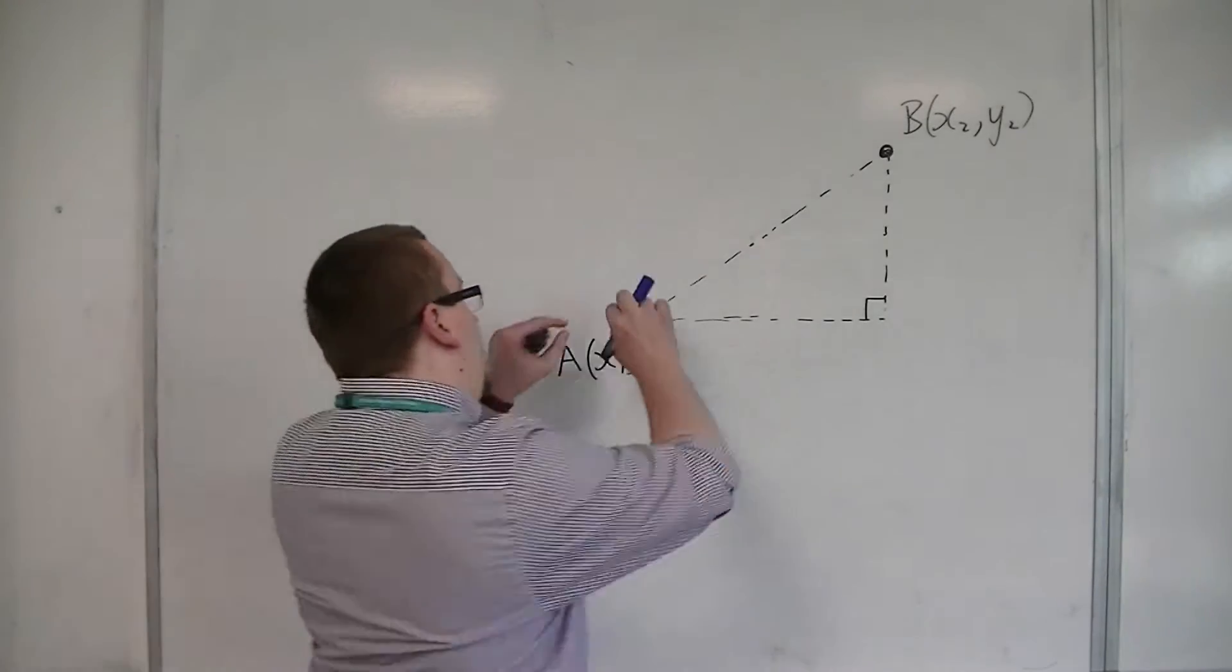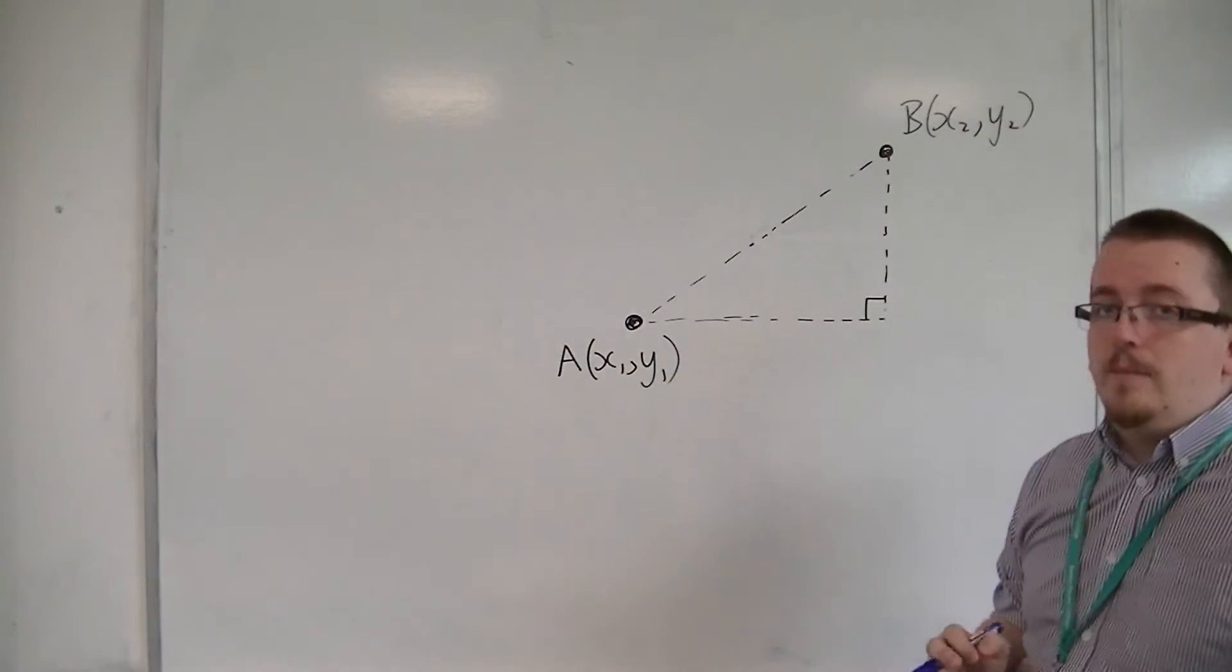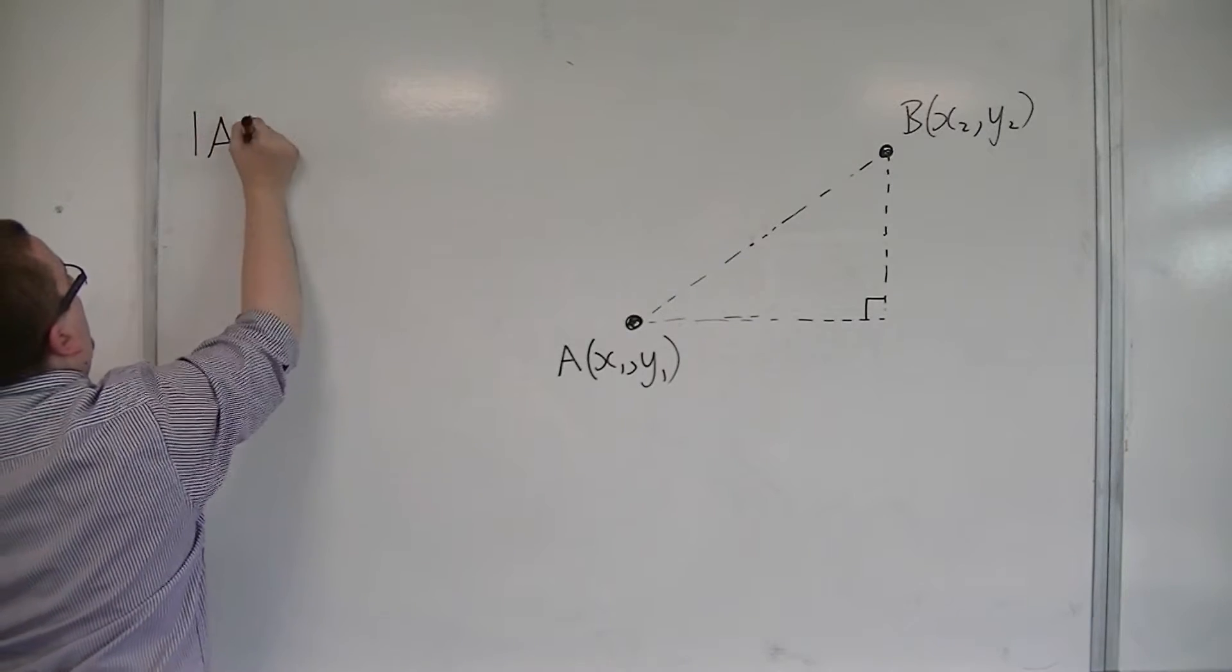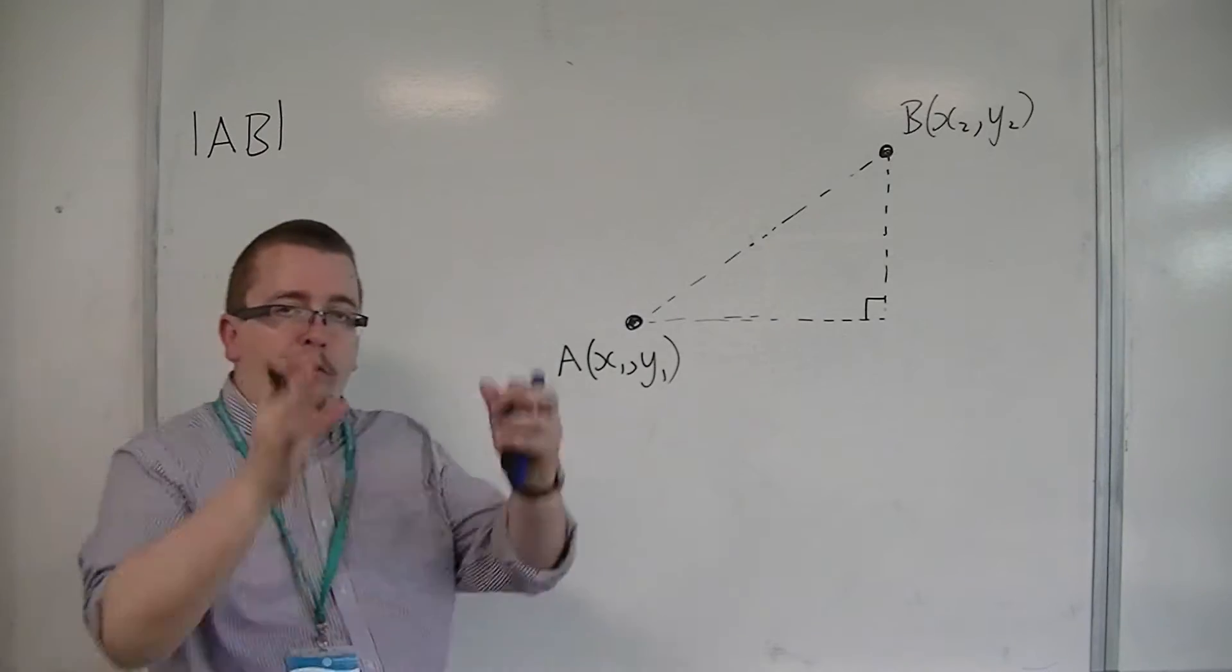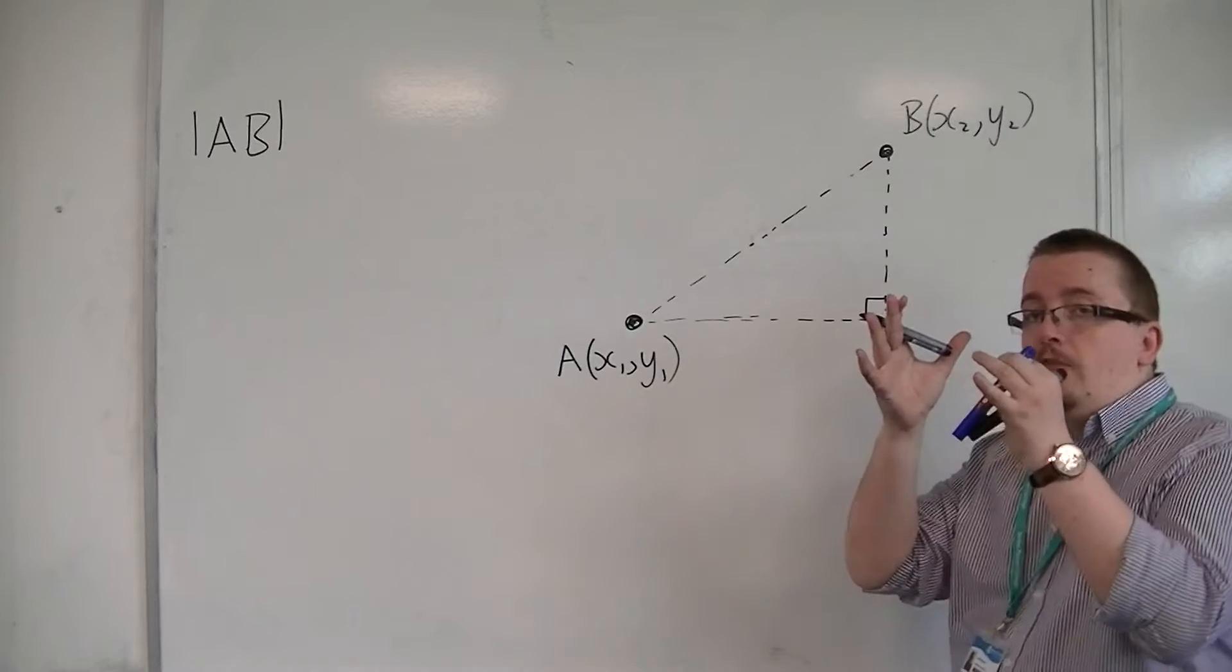So we want to find this distance, this diagonal distance, between A and B. And notation-wise, we can write that as the length of the line segment AB. So those two bars, modular symbols, tells you that we're looking for the length.